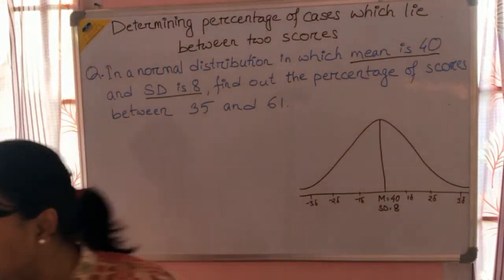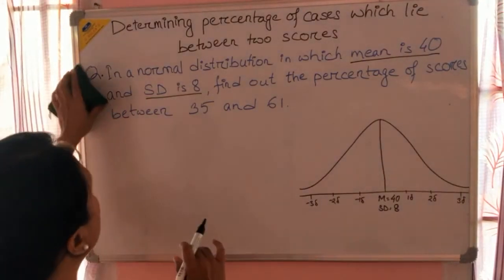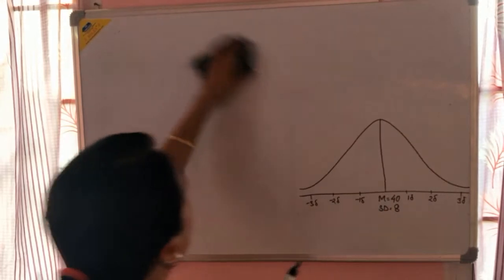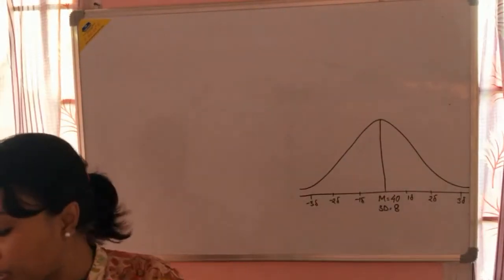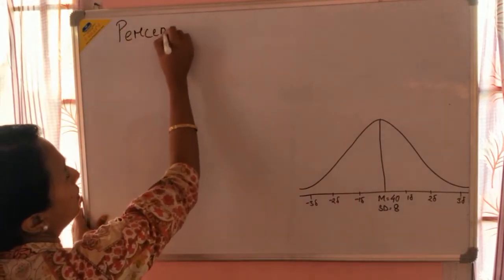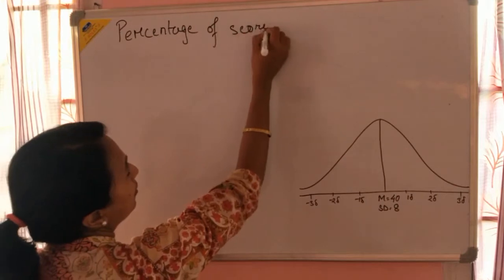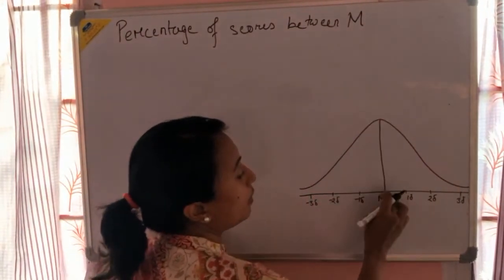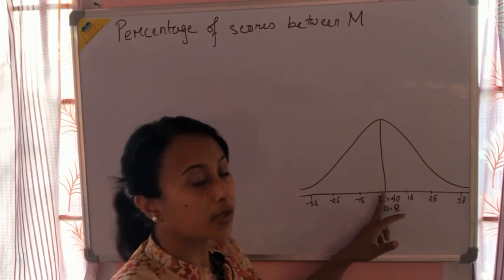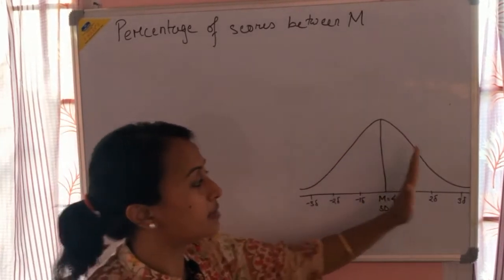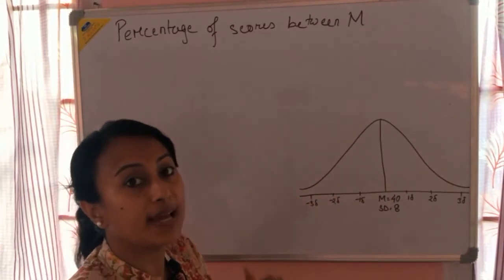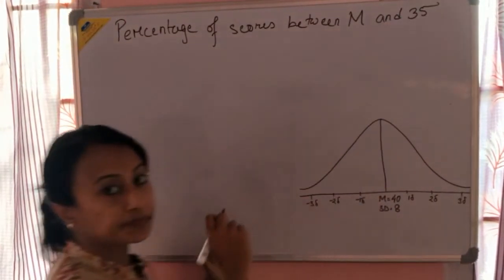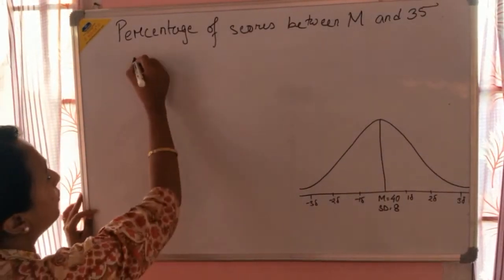We will use both of them to find out the percentage of cases or percentage of scores between 35 and 61. The first thing we will do is find out the percentage of scores between the mean, because we always say that mean is our starting point. We cannot directly find out the area between 35 and 61; we have to take the mean as the starting point. So we will first find the percentage of scores between mean and 35.